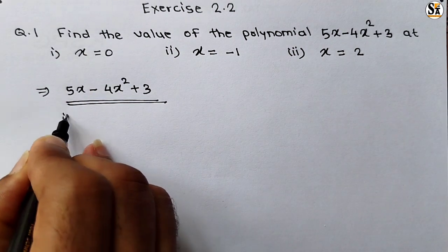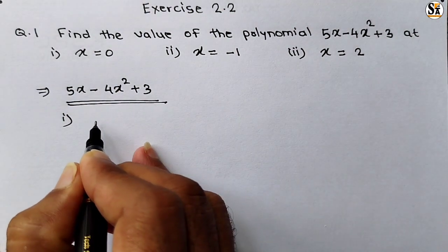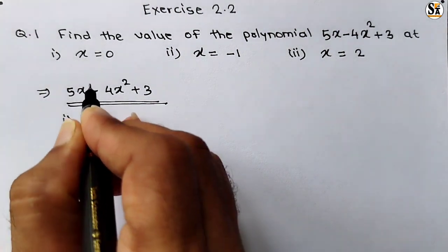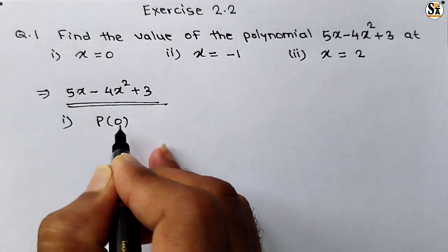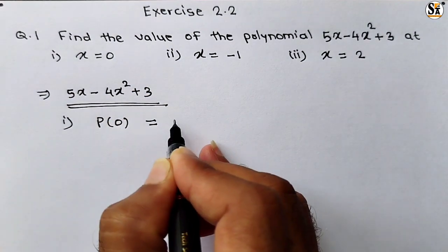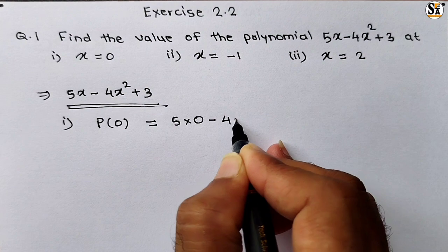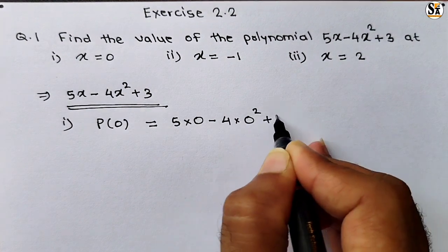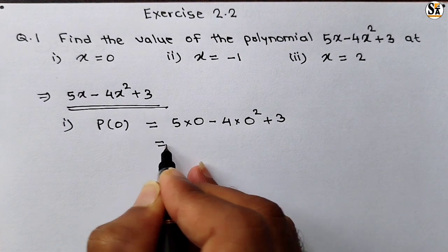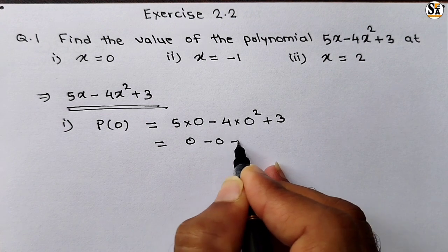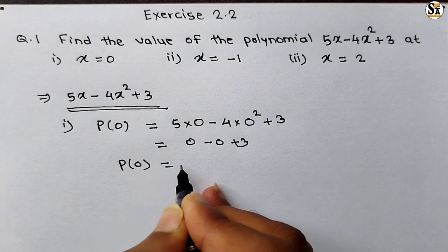In first case, put the value of x as 0. So p(0) is equal to 5 into 0 minus 4 into 0² plus 3. If we multiply with 0 we get 0, so 0 minus 0 plus 3. Our answer in first case is p(0) is equal to 3.